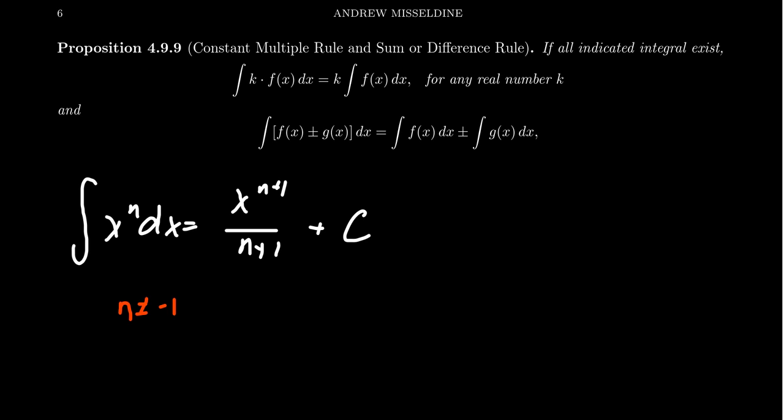So constant multiples, if you have a function f of x and you have a constant like a 2 or a 3 or a pi in front of it, just a constant, you can actually factor this constant out of the integral and so you get k times the integral of f of x.